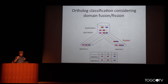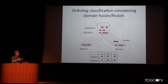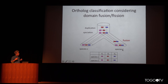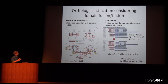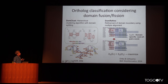I would also like to introduce another feature of our database: the orthology identification method. In this database, we consider ortholog relationships not only at the gene level but at the domain level. When domain fusion events occur, we split fused genes into different domains. For this purpose, we developed two programs: DOM-CLAST, a hierarchical clustering algorithm based on domain splitting, and DOM-Refine, which refines results using multiple sequence alignment. We combine these programs to make ortholog classification.